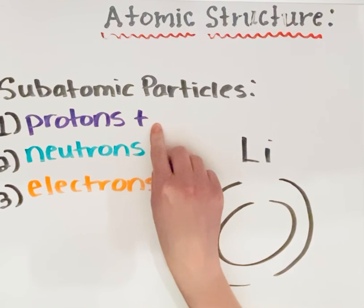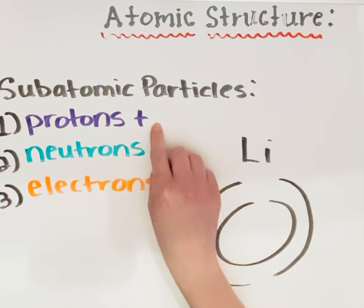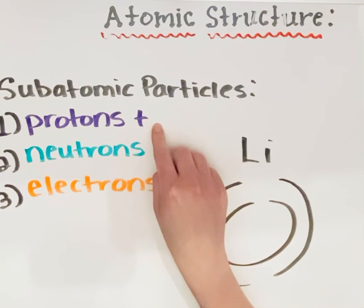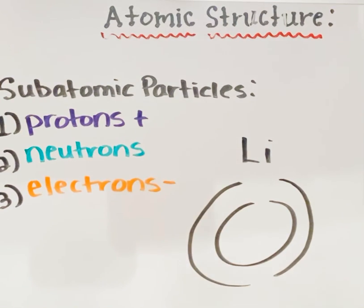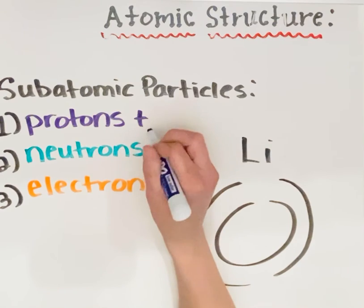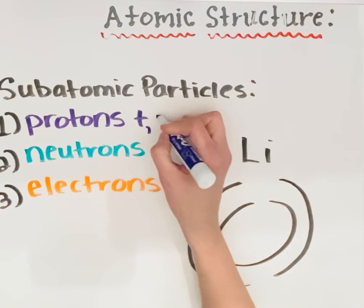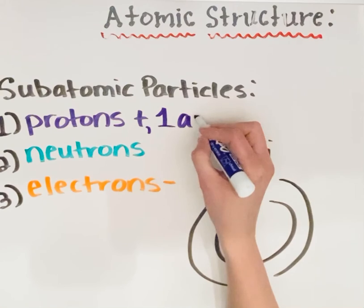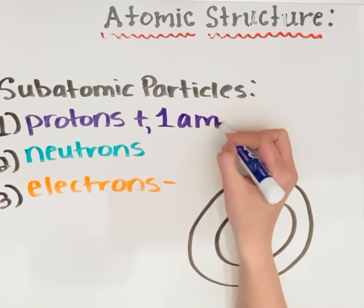Protons have a positive charge. Protons can be found in the center of the atom, which is also called the nucleus. Protons have a mass of one atomic mass unit — 1 amu. Atomic mass units are the units that have been designated for measuring atoms.